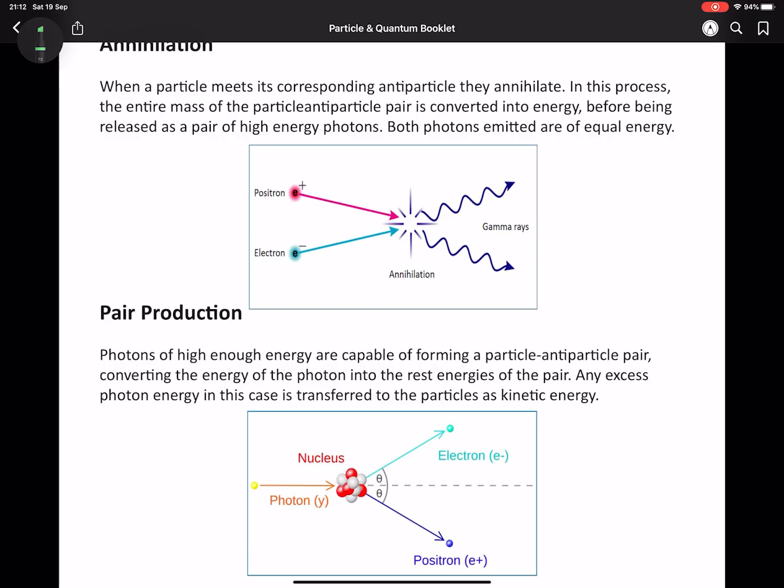This is where these two processes come into play. Annihilation is an effect that allows us to tell that we have antimatter present, even without charges to separate them. Because if a particle meets its own corresponding antiparticle, they will annihilate. If a proton and an antiproton were to come into contact, they would completely erase their matter and convert it directly into energy. This energy can't just be stored somewhere, it has to be released, and it will be released as two equal energy photons.